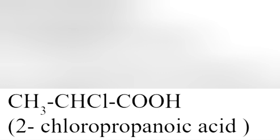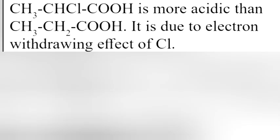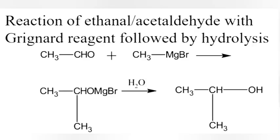Answer Part 1: CH3CHClCOOH, 2-chloropropanoic acid. Part 2: CH3CHClCOOH is more acidic than CH3CH2COOH. It is due to electron withdrawing effect of Cl. Part 3: Reaction of ethanol or acetaldehyde with Grignard reagent followed by hydrolysis.